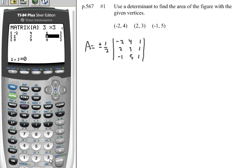2, 3, and 1. And last row, negative 1, 5, and 1. So I've got matrix A taken care of.